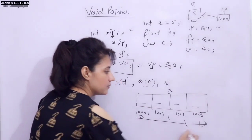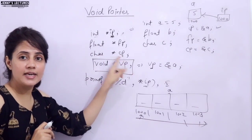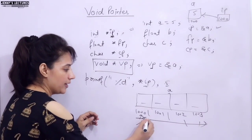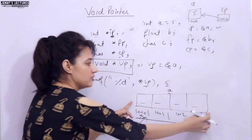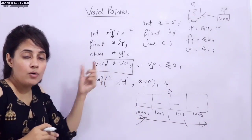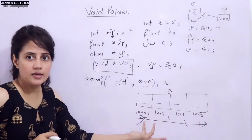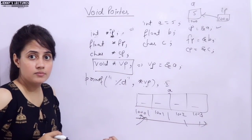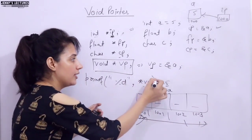Similarly, if you dereference a character pointer, character takes 1 byte — compiler knows to access only 1 byte. For float it has to access 4 bytes. But with a void pointer, void is not a data type — how will the compiler know whether to access 1 byte or 4 bytes? Compiler does not know. That is why we cannot dereference a void pointer directly.